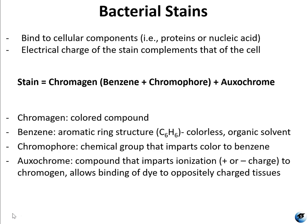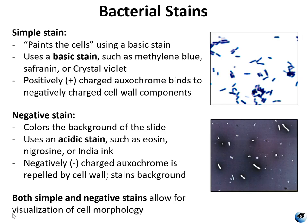The first kind of stain you're going to do in the lab is a simple stain. A simple stain paints the cells using a basic dye. Some basic stains are methylene blue, crystal violet, safranin, and carbofuchsin. All basic stains have a positively charged oxychrome that binds to the negatively charged cell wall components, so the simple stain attaches to the cell, making it turn the color of the stain, and you can see the cells on a white background.